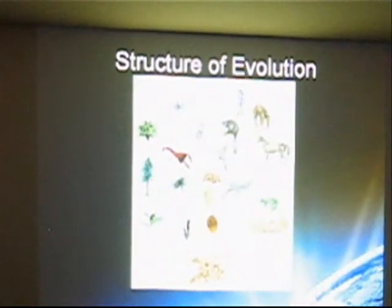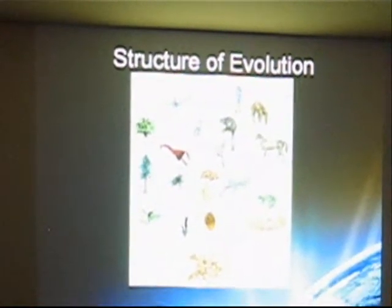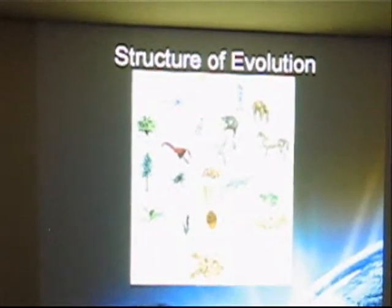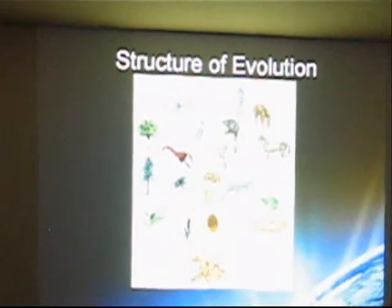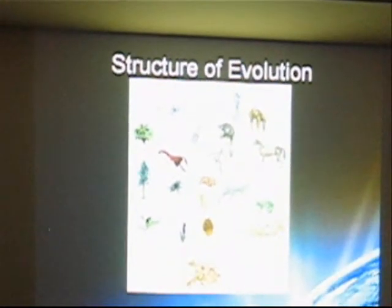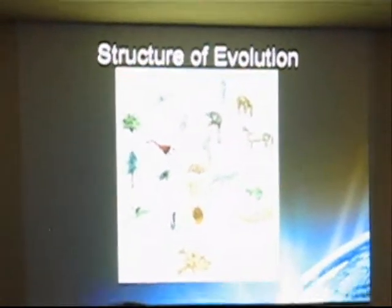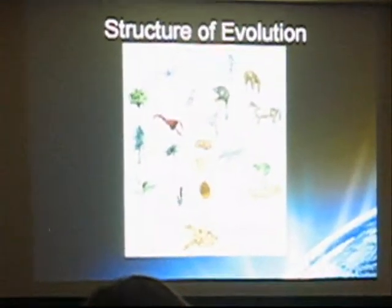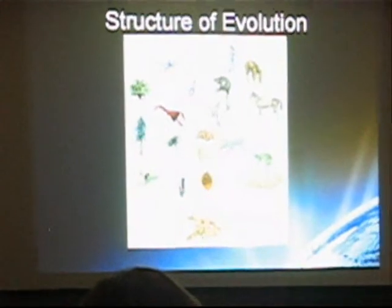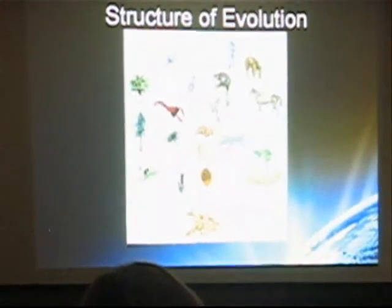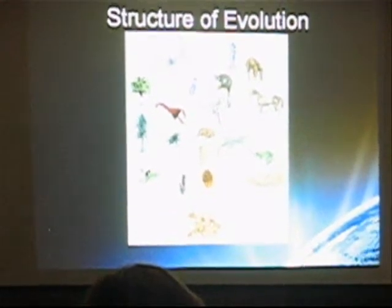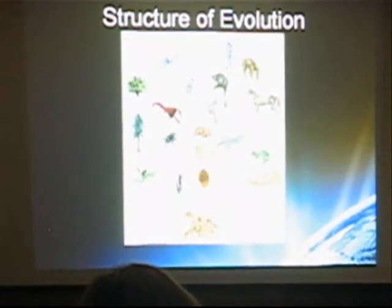Let me go back to this one — this is a classic diagram, an older diagram of evolution. The key point here is that you can connect everything back to a common ancestor. The tips of the tree of life, the ends of the branches, represent modern organisms.